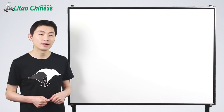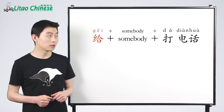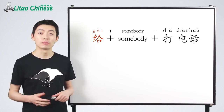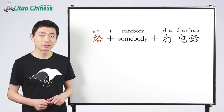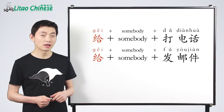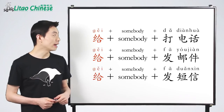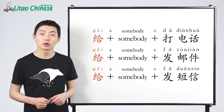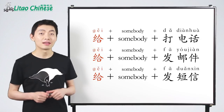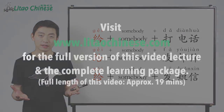在第十五课，我们已经学习了给 plus somebody plus 打电话，意思是to call somebody。所以，给somebody发邮件和给somebody发短信，they share the same structure，在这里。